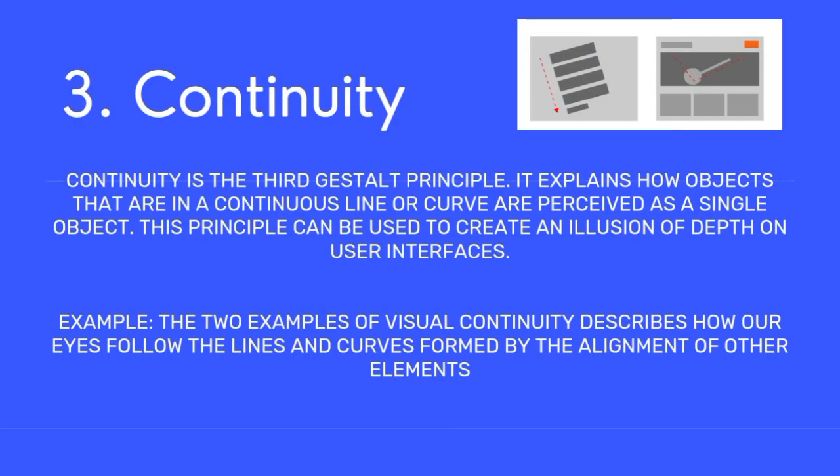Continuity is the third Gestalt principle. It explains how objects that are in a continuous line or curve are perceived as a single object. This principle can be used to create an illusion of depth on user interfaces. The two examples of visual continuity describe how our eyes follow the lines and curves formed by the alignment of other elements.